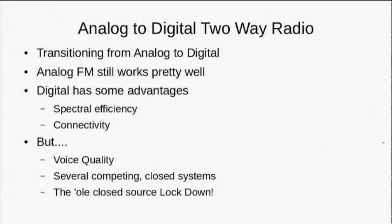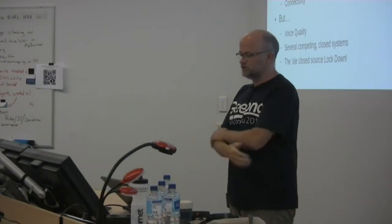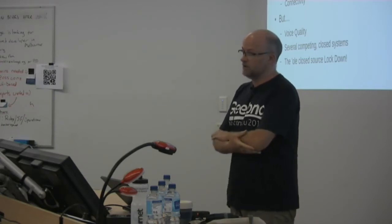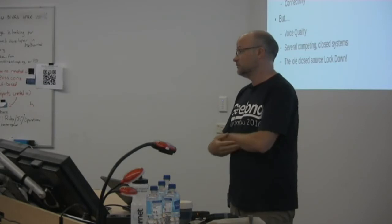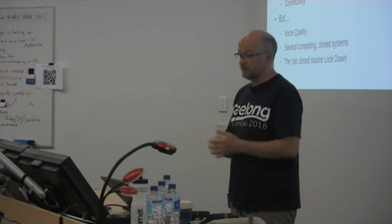There are some interesting things about the digital versus analogue contrast. This older style radio uses analogue FM, and that still works pretty well. The digital has some advantages — in particular, people are aiming at spectral efficiency: you can get several digital signals in the space of one analogue signal. There are also potential advantages in connectivity — once the signal is digitised, you can trunk it, route it, send it over the internet, record it more easily. However, there are some lingering issues with current digital systems. Voice quality is one — many just don't sound as good as FM, and they struggle with some voices.